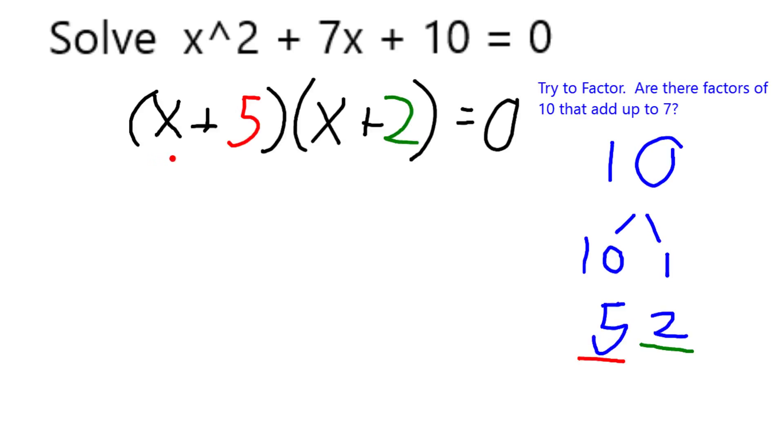This allows me to rewrite the left side of my equation as x plus 5, coming from the factor 5, times x plus 2, coming from the factor 2.